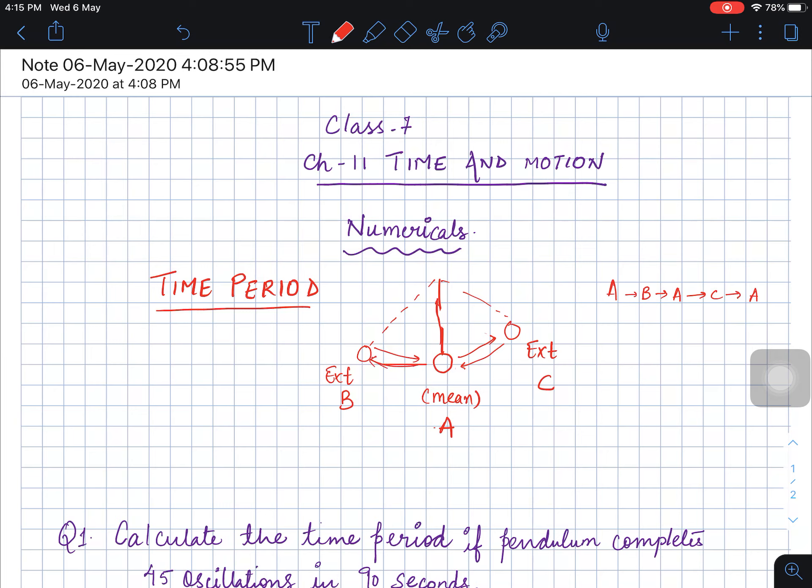So this is again one complete oscillation: B to A, A to C, C to A, and finally to B.